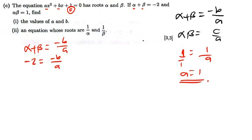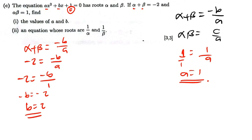So a equals 1. Now coming back to the first equation: negative 2 equals negative b over a, and since a is 1, I cross-multiply to get negative b equals negative 2. Dividing both sides by negative 1, b equals 2. So the values are a equals 1 and b equals 2.